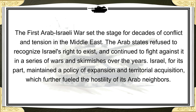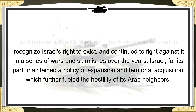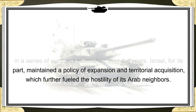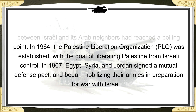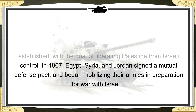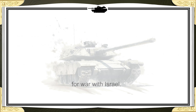Israel, for its part, maintained a policy of expansion and territorial acquisition, which further fueled the hostility of its Arab neighbors. The lead-up to the Six-Day War: by the mid-1960s, tensions between Israel and its Arab neighbors had reached a boiling point. In 1964, the Palestine Liberation Organization was established with the goal of liberating Palestine from Israeli control. In 1967, Egypt, Syria, and Jordan signed a mutual defense pact and began mobilizing their armies in preparation for war with Israel.